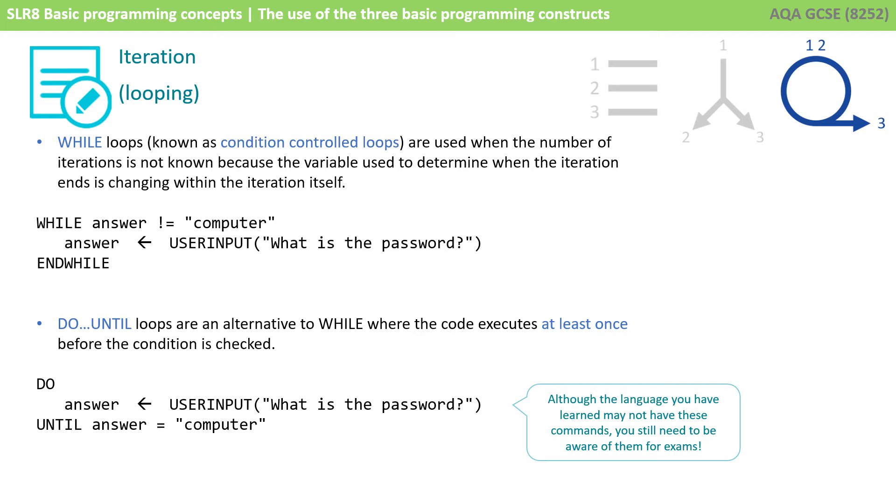Another form of iteration or looping you may be aware of is the while loop. Now these are known as condition-controlled loops, and they're used when the number of iterations is not known, because the variable used to determine when the iteration ends is changing, often within the iteration itself.